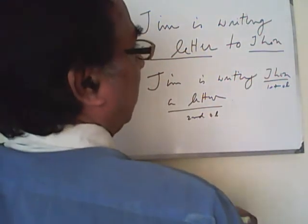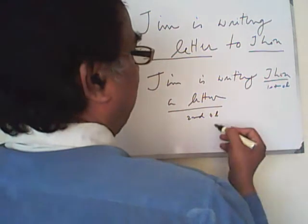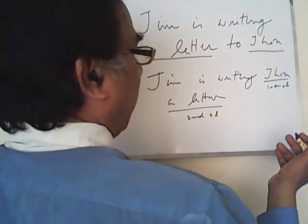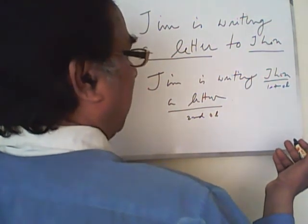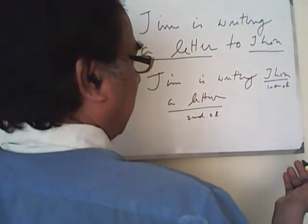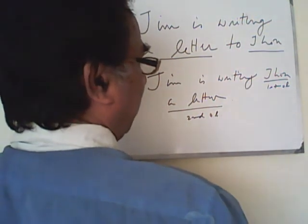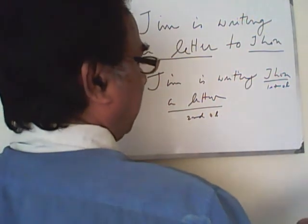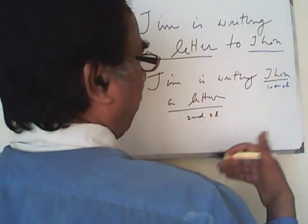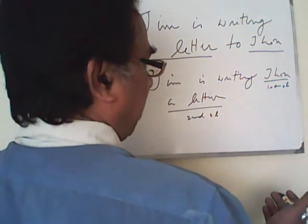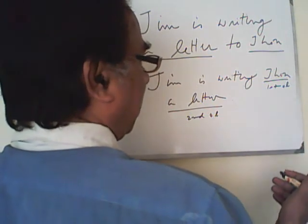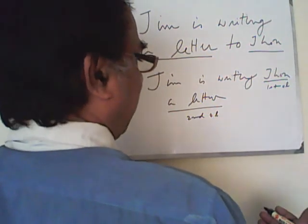Got it. Then the rule: the rule is that you have to write the direct object first. But if you write the direct object first and the indirect object second, you need a preposition. That is all.